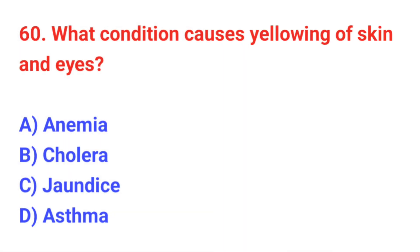Question number 60: What condition causes yellowing of skin and eyes? The correct answer is C: Jaundice.